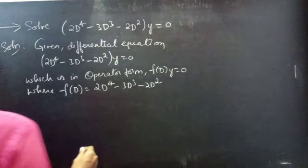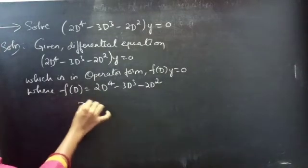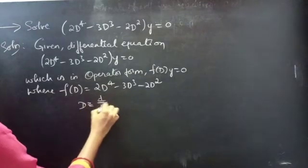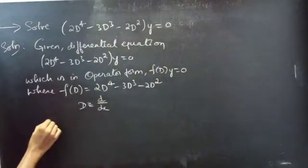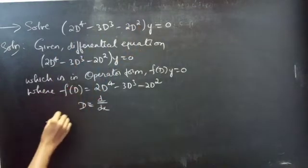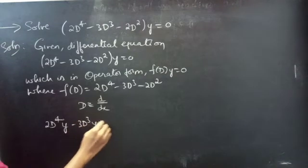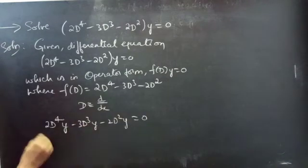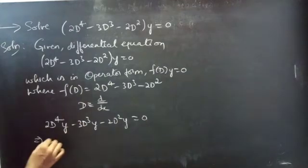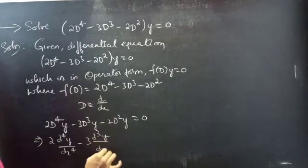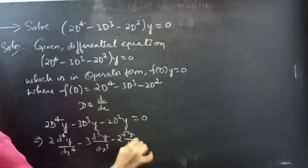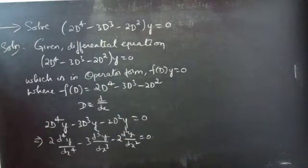Now we will see what is the order and degree of our given differential equation. We know that the operator D is represented as d/dx. Then we write the equation as 2D⁴y - 3D³y - 2D²y = 0. Replacing D by d/dx, we get 2(d⁴y/dx⁴) - 3(d³y/dx³) - 2(d²y/dx²) = 0. So here our highest derivative is d⁴y/dx⁴.